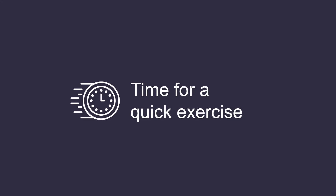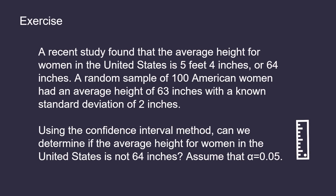Now that we have covered how confidence intervals and hypothesis tests are related, let's see what we've learned by doing a quick exercise. A recent study found that the average height for women in the United States is 5 feet 4 inches, or 64 inches. A random sample of 100 American women had an average height of 63 inches with a known standard deviation of 2 inches. Using the confidence interval method, can we determine if the average height for women in the United States is not 64 inches? Assume that alpha equals 0.05.